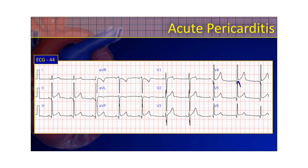On this one, you even have a little bit of J-point notching — notched J-points — like you see with early repolarization, and it is going to look a lot like early repolarization. You may have PR segment depression with your more viral pericarditis. One big indicator is this thing called Spodick's sign, where you get this downward trending of the isoelectric line. It starts at the J-point and goes downward all the way into the PR segment, creating little stair steps. That's called Spodick's sign, and it's indicative of acute pericarditis.